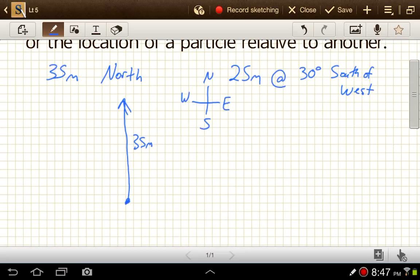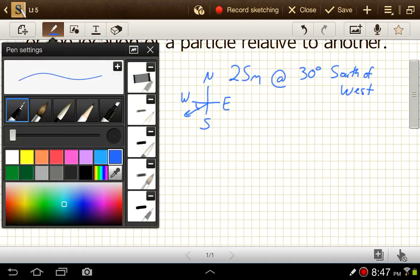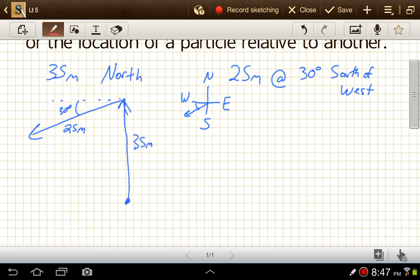So 30 degrees south of west. That means we start at west and we rotate to the south, 30 degrees. That's something like this, so come down like this. This is 30 degrees, and that's 25 meters.